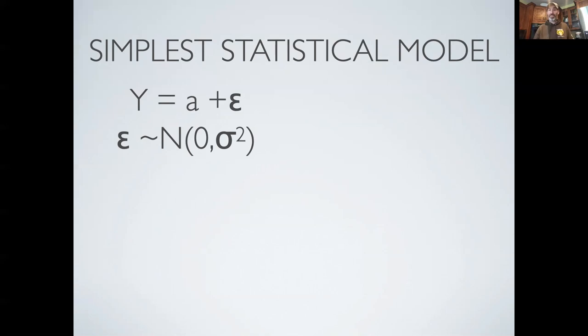In practice, how we do this is by adding on this error term epsilon that tells us about how any particular observation differs from that model a. So if Y and a are a little bit different, epsilon accounts for that difference.